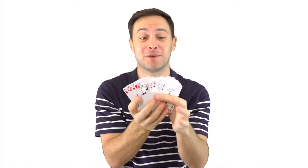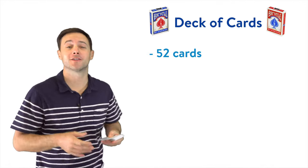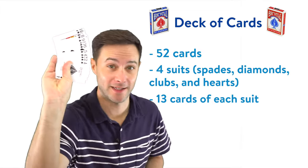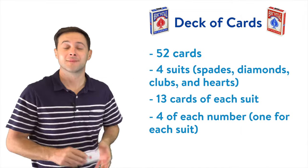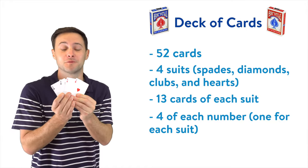So first, let's break it down. There are 52 total cards in a full deck. Those 52 cards are broken up into four suits. And those suits are the spades, the diamonds, the clubs, and finally, the hearts. And so naturally, there's four of each number, there are four aces, one of each suit.